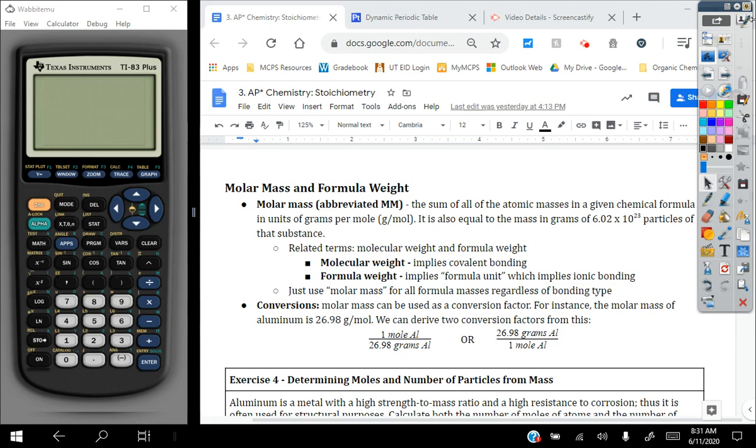Molar mass, which is abbreviated as mm sometimes, is the sum of all the atomic masses in a given chemical formula. Typically it has units of grams per mole. On the periodic table you're used to looking at average atomic masses and those being in units of atomic mass units or AMU.